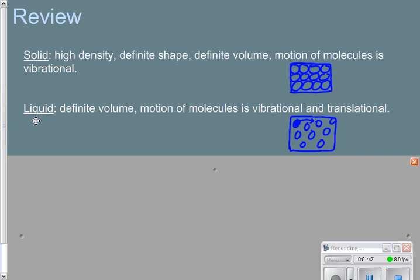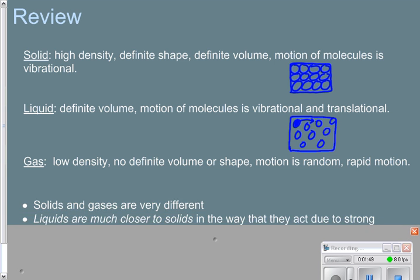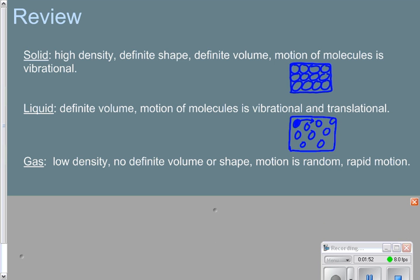The third state of matter is a gas. Gases have low density, they don't have a definite volume or shape because they can be compressed and expanded, and the motion is random and rapid. If I were to draw a cross-section of a gas, I would have very few molecules in that same box. These molecules or particles are going to move in straight lines until they collide either with each other or with the wall of their container. Those collisions are going to cause what we call pressure.